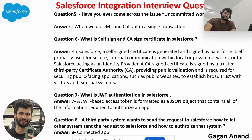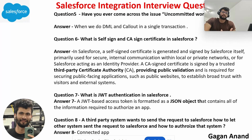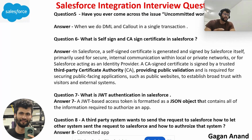Seventh question: what is JWT authentication in Salesforce? A JWT-based access token is formatted as a JSON object that contains all the information required to authorize an app. JWT token is a kind of token we can use in OAuth 2.0 as well. It generates a token in JSON format and contains all the necessary information required to authorize a particular application.